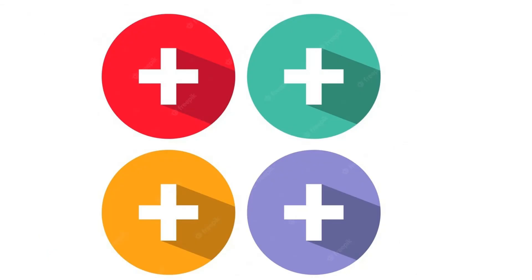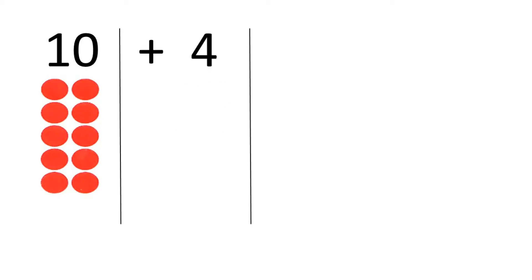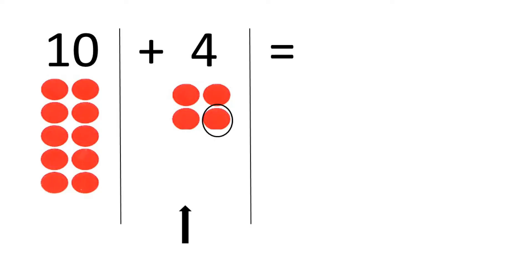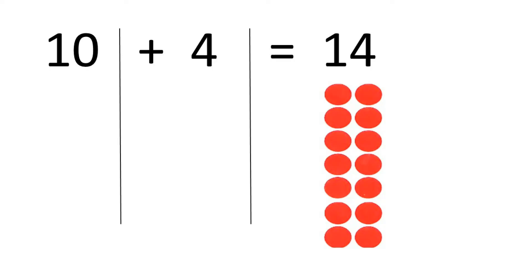Now let's add numbers from 1 until 20. 10, so I will draw 10 red dots. Plus 4, I will draw 4 red dots. 10 plus 4 equals... Let's count them. Now we know we have 10 red dots here, so let's count upwards. 11, 12, 13, 14. So 10 plus 4 equals 14, and I draw 14 red dots below.